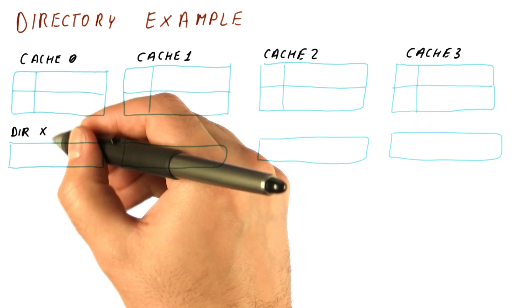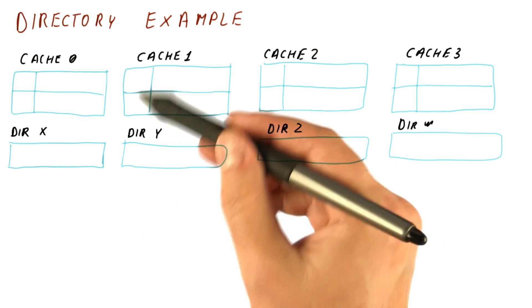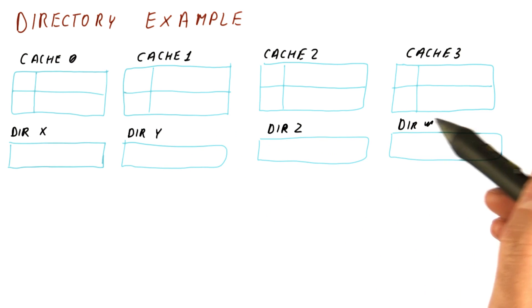So this is the directory slice where we keep the block x information. And then next to cache one there is directory y, z, and w.